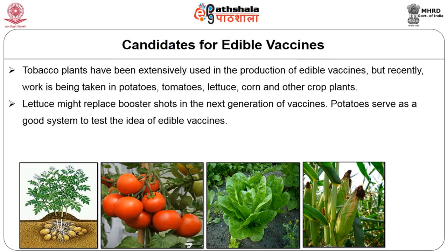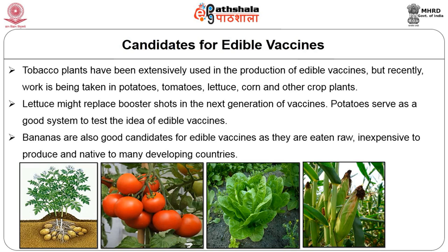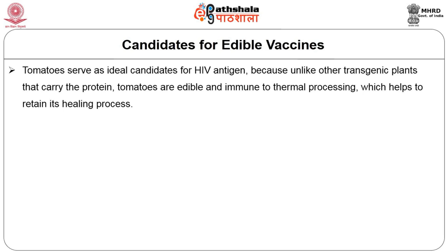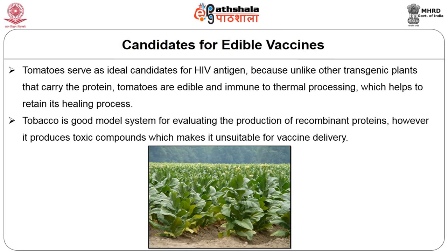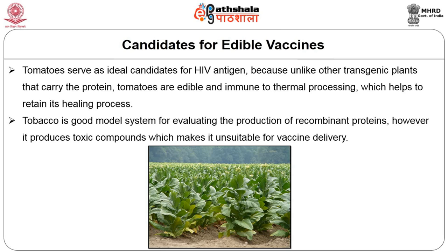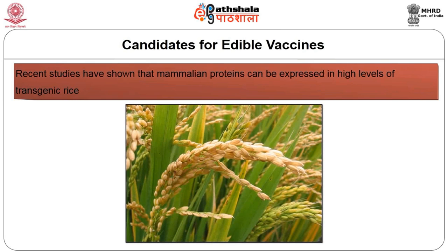Lettuce might replace injections in the next generation of vaccines. Potatoes serve as a good system to test the idea of edible vaccines. Bananas are good candidates for edible vaccines as they are eaten raw, inexpensive to produce, and native to many developing countries. Tomatoes serve as ideal candidates for HIV antigen because, unlike other transgenic plants, tomatoes are edible and immune to thermal processing, so vaccine antigen does not denature. Tobacco is a good model system for evaluating the production of recombinant proteins; however, it produces toxic compounds, making it unsuitable for vaccine delivery.